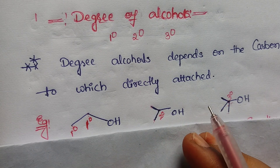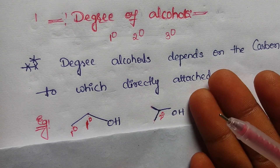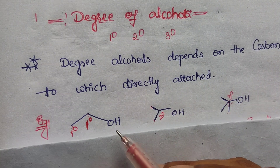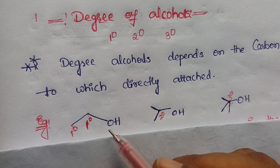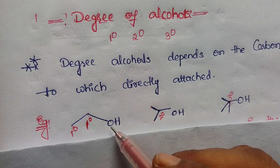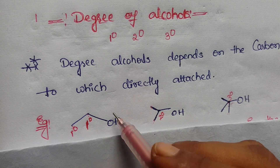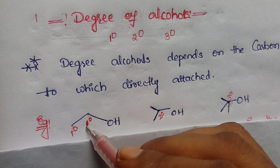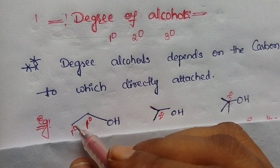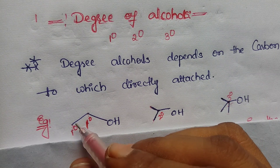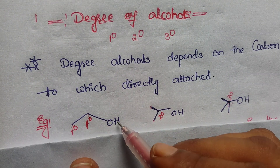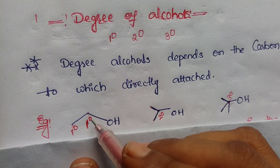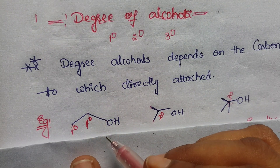Primary alcohols means — alcohol means OH group, that is a hydroxyl group. So primary alcohols means the OH group or hydroxyl group is attached to the primary carbon. Here it is a primary carbon because it is attached to only one other carbon atom. So here this hydroxyl group is attached to the primary carbon, so it is a primary alcohol.